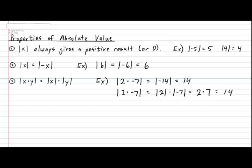And finally, the fourth property of absolute value is just as interesting as the third one. The fourth one is the absolute value of a quotient, and that property states that the numerator and the denominator can be pulled apart and each one receives its own absolute value. So in other words, the absolute value of x over y equals the absolute value of x over the absolute value of y.